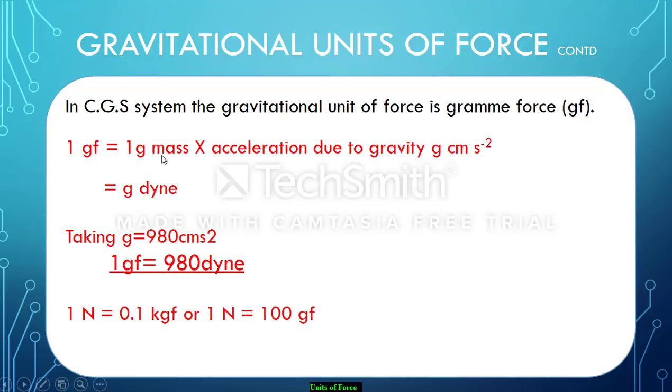So mass in grams and acceleration in centimeter per second square is always a dyne. So g dyne. Here we are taking g in centimeter per second square. So g is 980 centimeter per second square. So what is gf again? Taking the value as g = 980 cm/s², it comes to 980 dyne.